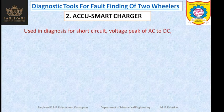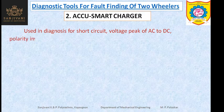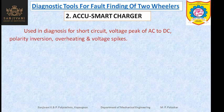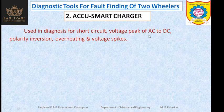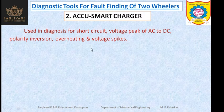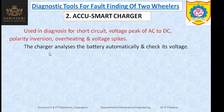The next device is the AccuSmart charger. This AccuSmart charger is used in diagnosis for short circuit detection, voltage peak of AC to DC, polarity inversion, overheating, and voltage spikes. All electricity-related faults — if there is a short circuit, the position of the short circuit, the voltage peak of AC to DC, polarity inversion, overheating, or voltage spikes — can be detected by the AccuSmart charger. This AccuSmart charger will automatically analyze the battery and the battery voltage can also be checked.